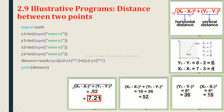The formula is: square root of (x2 minus x1) whole square plus (y2 minus y1) whole square. First, we calculate the vertical distance: y2 minus y1. y2 = 8, y1 = 2, so y2 minus y1 = 8 minus 2 = 6. Next, the horizontal distance: x2 minus x1. x2 = 7, x1 = 3, so x2 minus x1 = 7 minus 3 = 4.